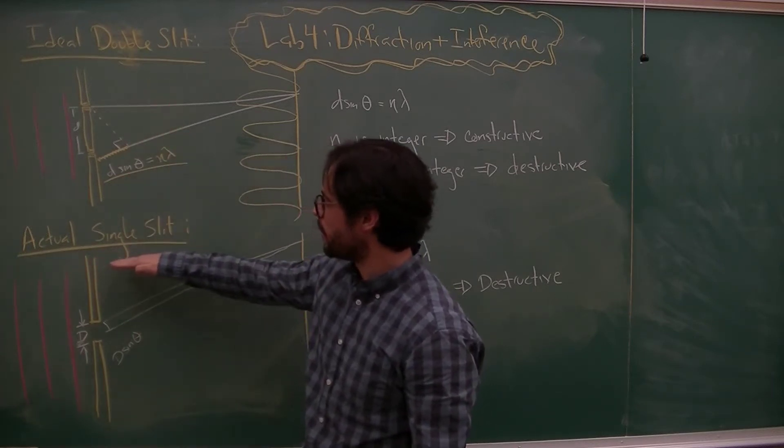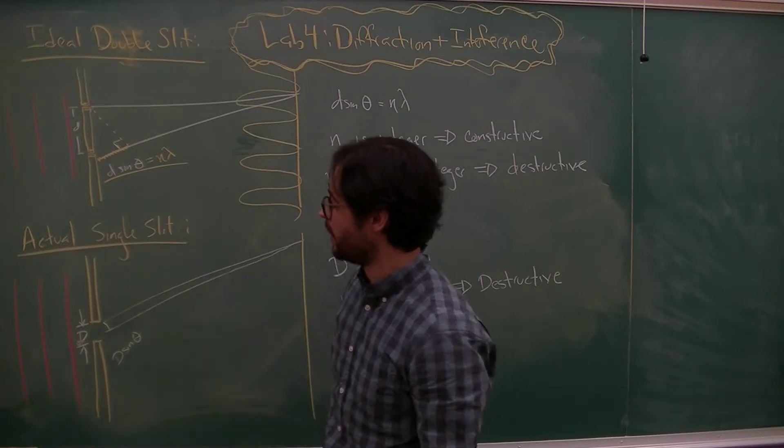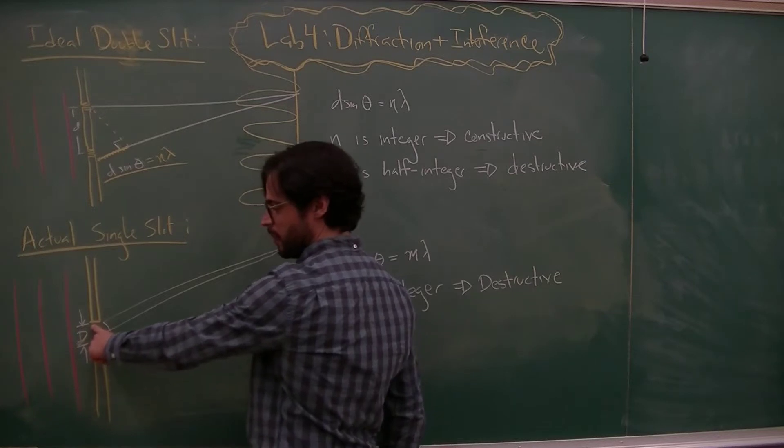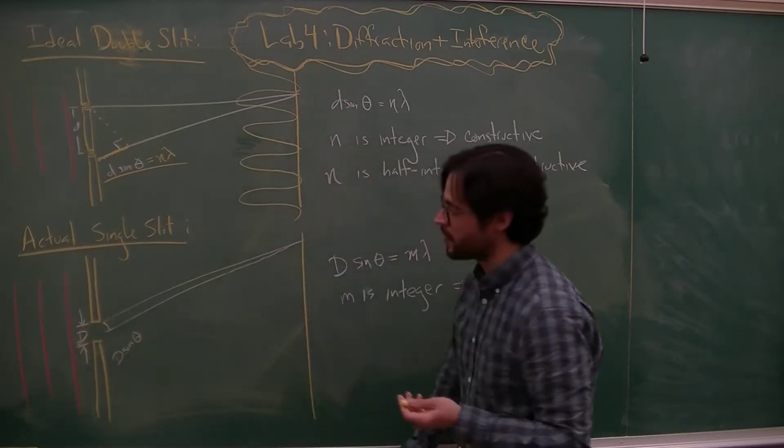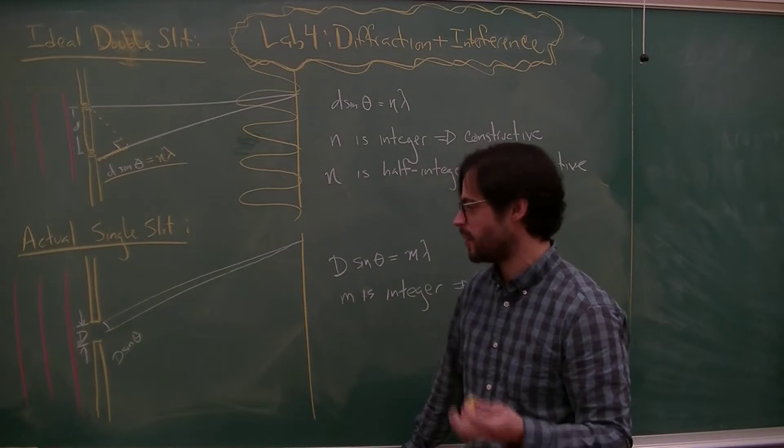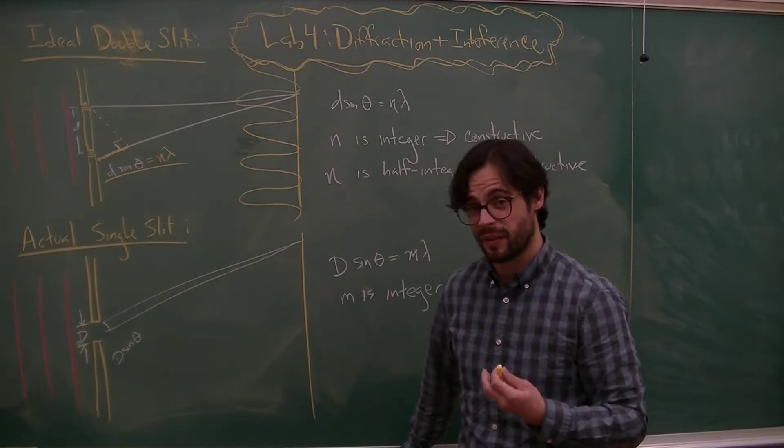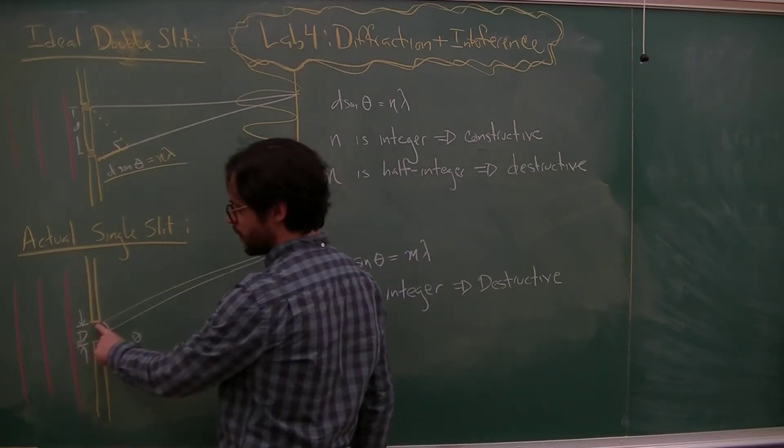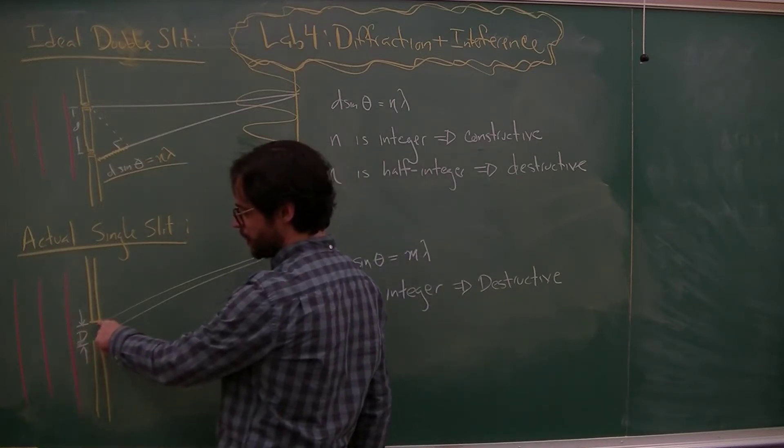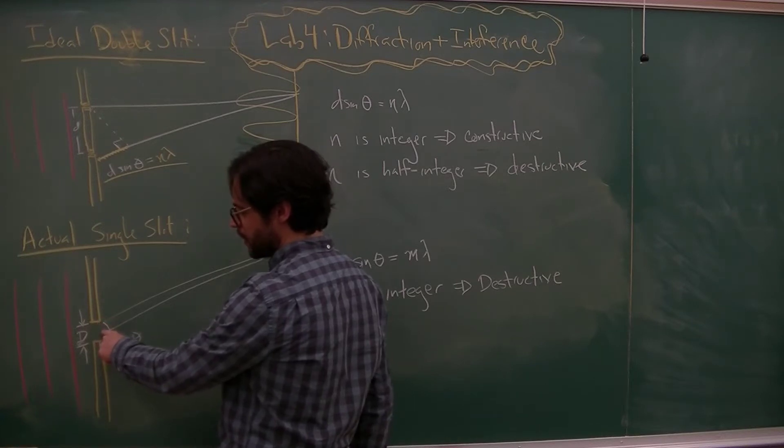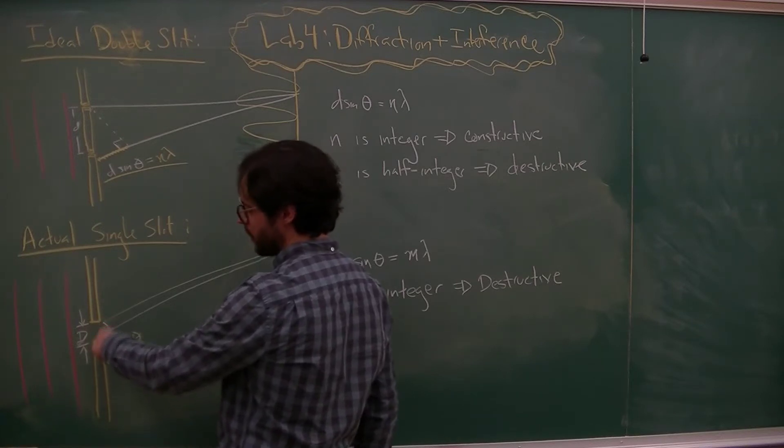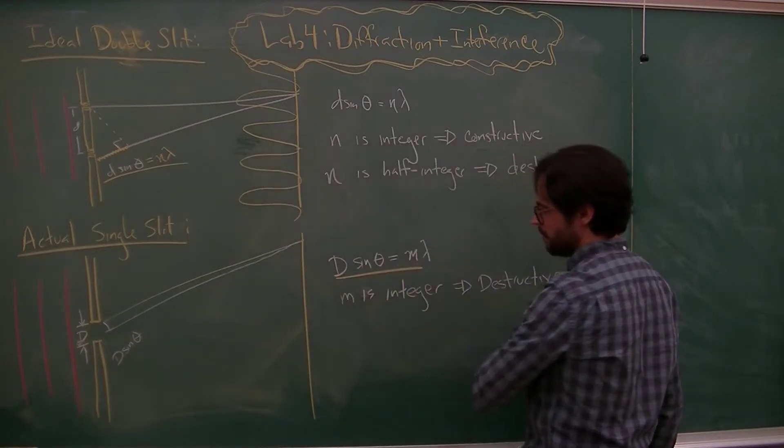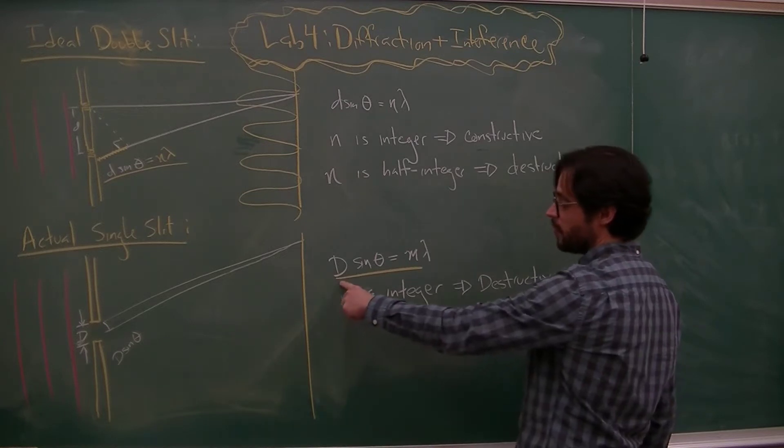So diffraction occurs when I have a slit that has some non-zero width. So diffraction in some sense is also an interference phenomenon, where light through the slit is interfering with light through the slit. And again, the details of the derivation will be done over in lecture, but basically the light from the top of the slit is interfering with light from the middle of the slit and light from the bottom of the slit. There's a really clever way of pairing them off.